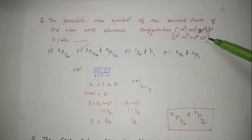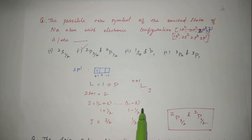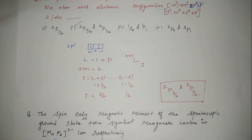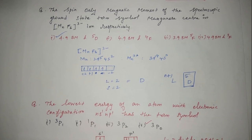Number of unpaired electrons is 1, so 1+1=2 and spin multiplicity is 2. The J values are L+S and L−S: that is 3/2 and 1/2. Therefore the two possible excited state term symbols are ²P₃/₂ and ²P₁/₂. The correct option is ²P₃/₂ and ²P₁/₂.